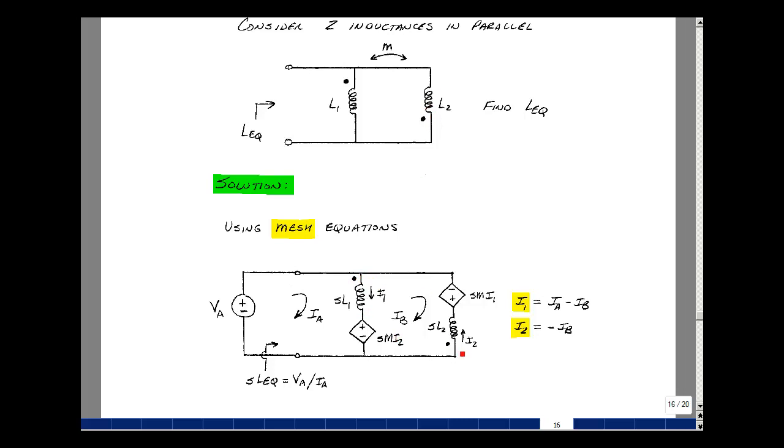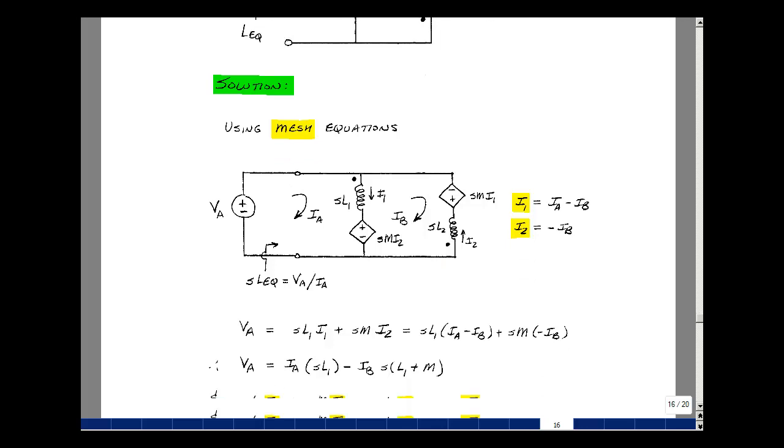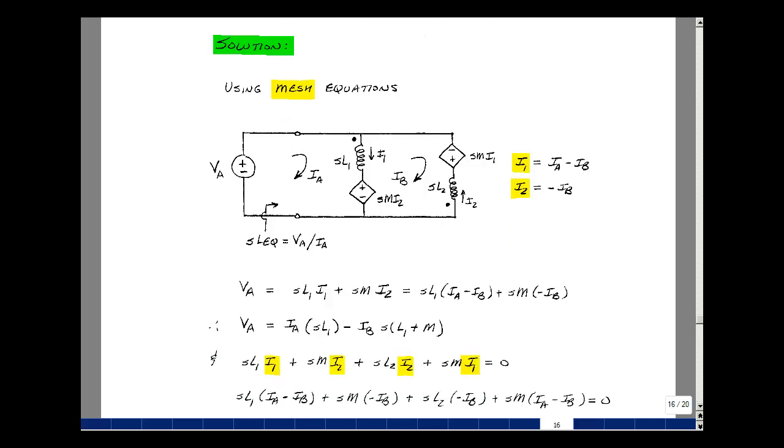So where L1 is located, we're going to replace that with SL1 and a controlled source with SM times I2, and we're going to define I1 coming into the dot and then leaving it this way. Likewise for L2, we'll have the current I2 defined in this direction with SL2 plus SM1. Okay, now we can take a look at writing equations. So let's assign a mesh equation current here and a mesh equation current here. Call it I sub A and I sub B. Very important that we keep these orientations for I1 and I2 correct.